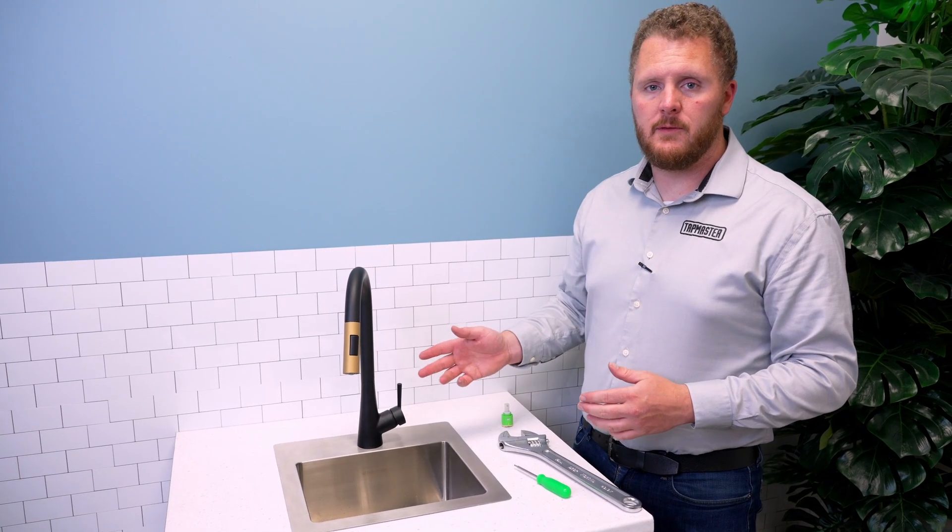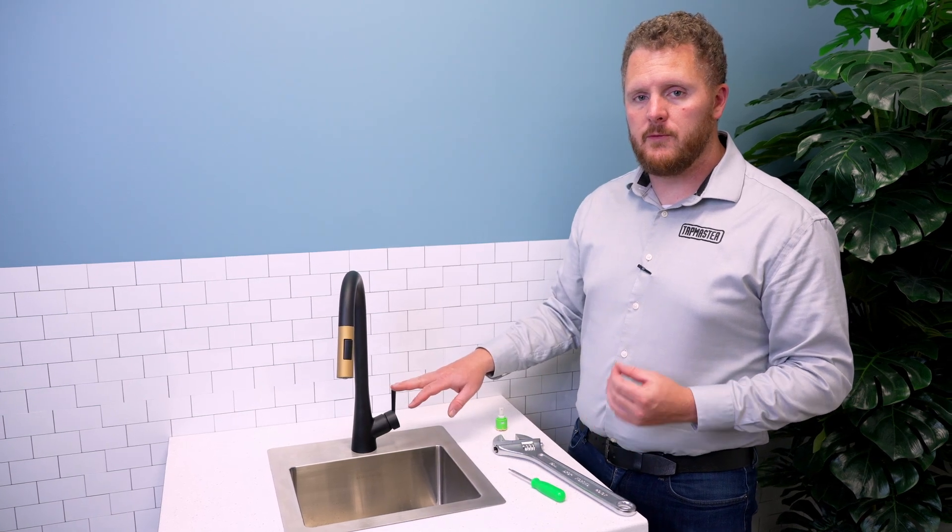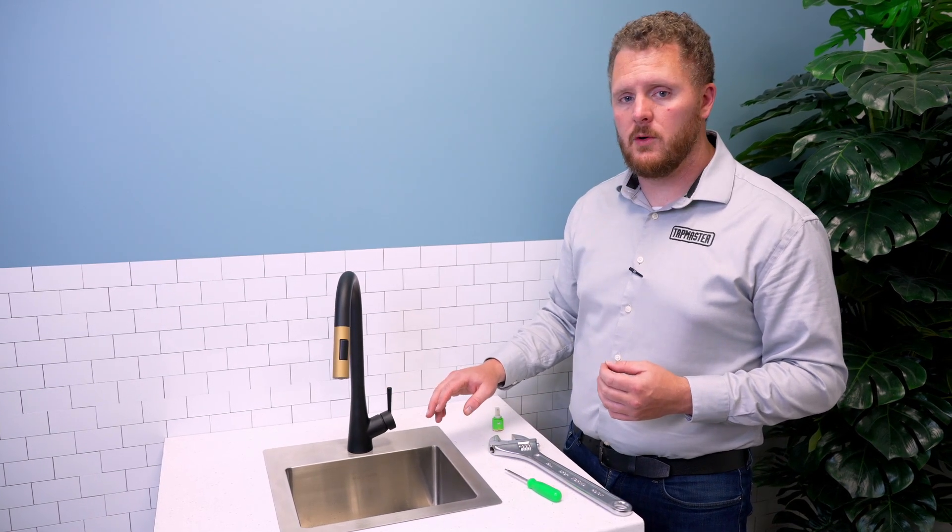All right, so we're going to go over what you do if you've got a leaky faucet. Usually what that means is your faucet cartridge itself has gone bad. The faucet cartridge is the part of the faucet that controls water flow and temperature.